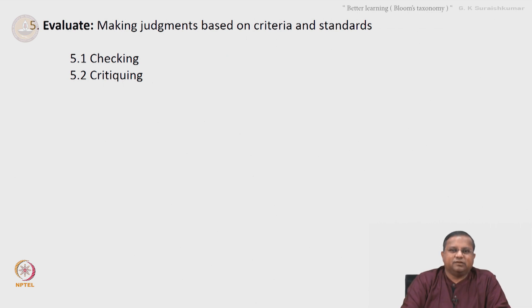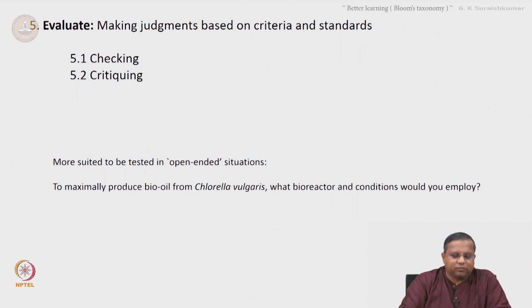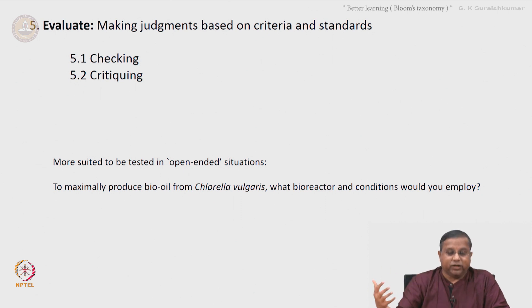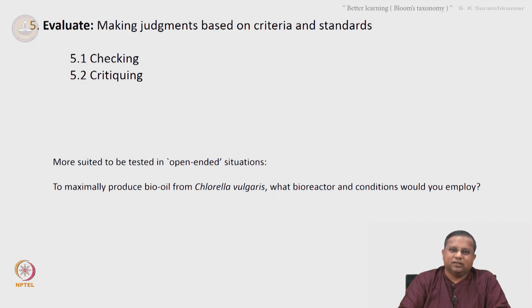The evaluate level involves making judgments based on criteria and standards, such as checking and critiquing — best addressed by open-ended questions. An example: 'To maximally produce bio-oil from Chlorella vulgaris, what bioreactor conditions would you employ?' This calls for evaluating the various bioreactors available, their advantages and disadvantages, then deciding what is appropriate. Since Chlorella is a photosynthetic organism, it needs light, so a photobioreactor is needed with the optimal conditions for that purpose.